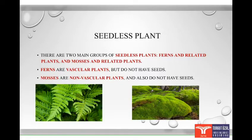Which are the two main groups of seedless plants? They are ferns and mosses. Ferns are vascular plants but do not have seeds, while mosses are non-vascular plants and also do not have seeds.